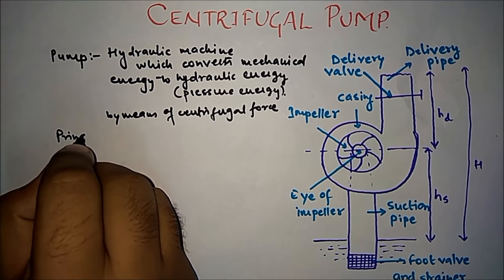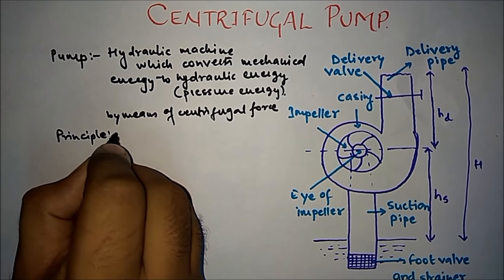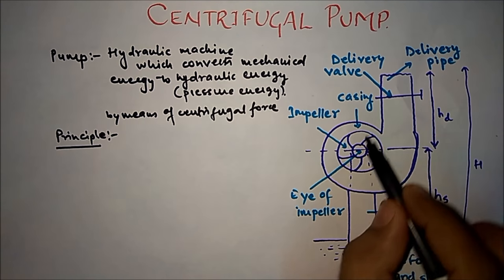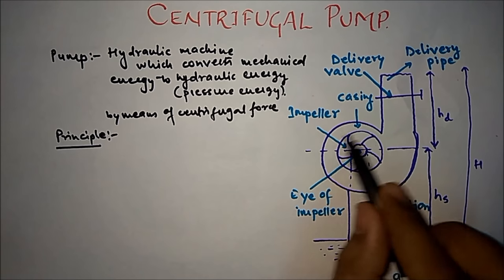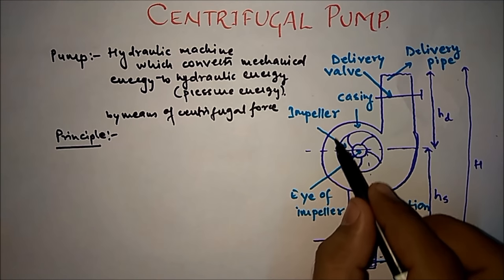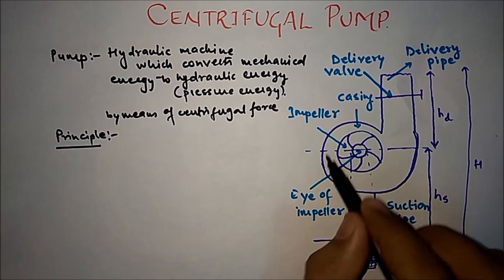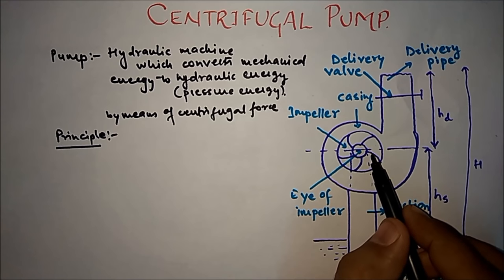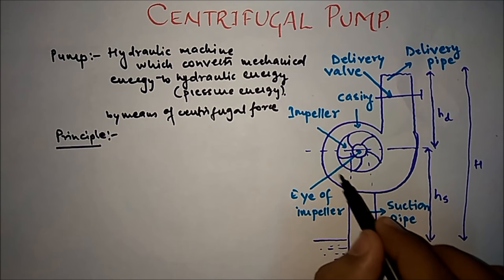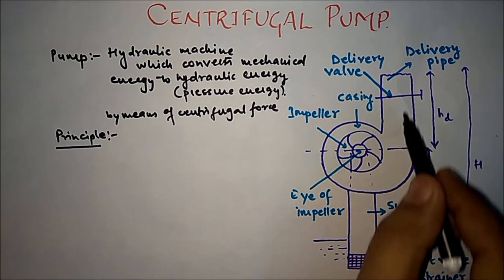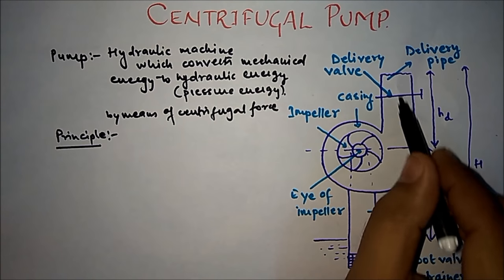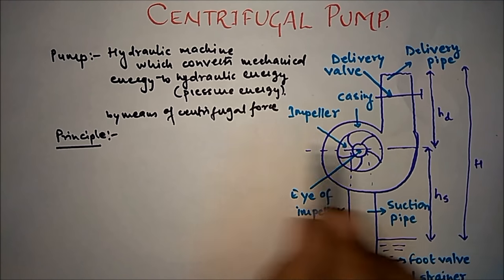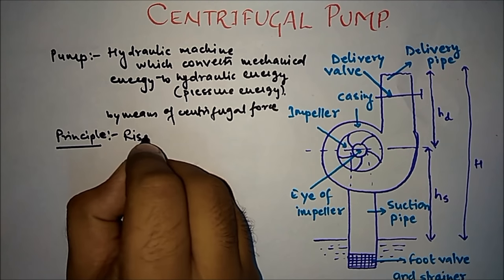Before moving to the working, we will discuss the principle. The principle of the centrifugal pump says that the rise in pressure head is related to the tangential velocity. Water is filled here with the help of the suction pipe, and with the help of the impeller the water is rotated, by which it gets velocity — that velocity is known as tangential velocity. At the output we get the pressure head, which is directly proportional to the tangential velocity in the casing.